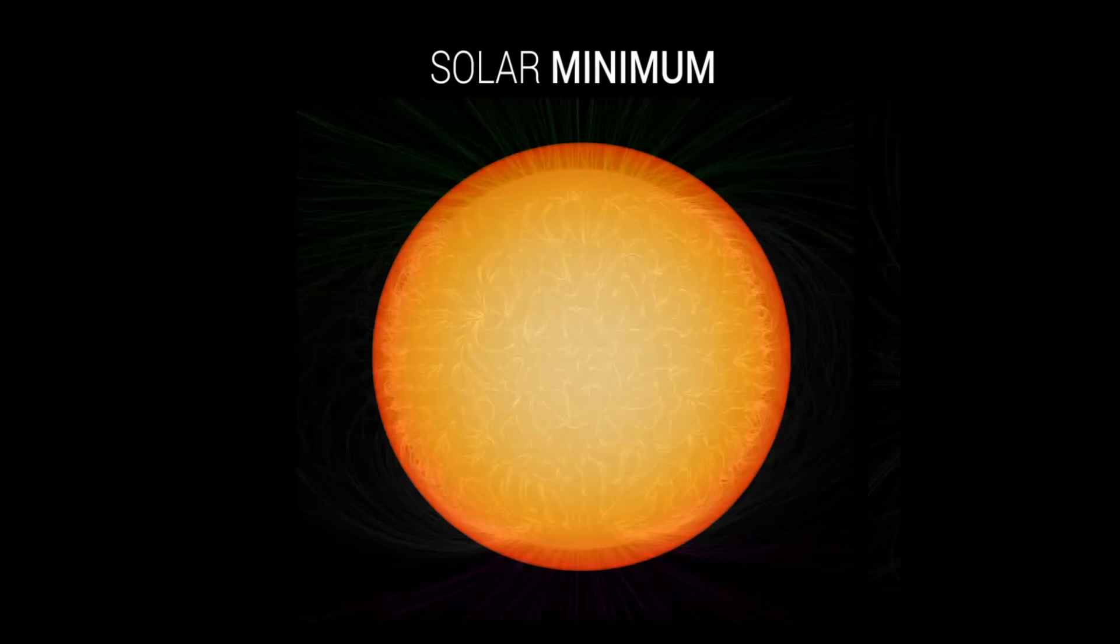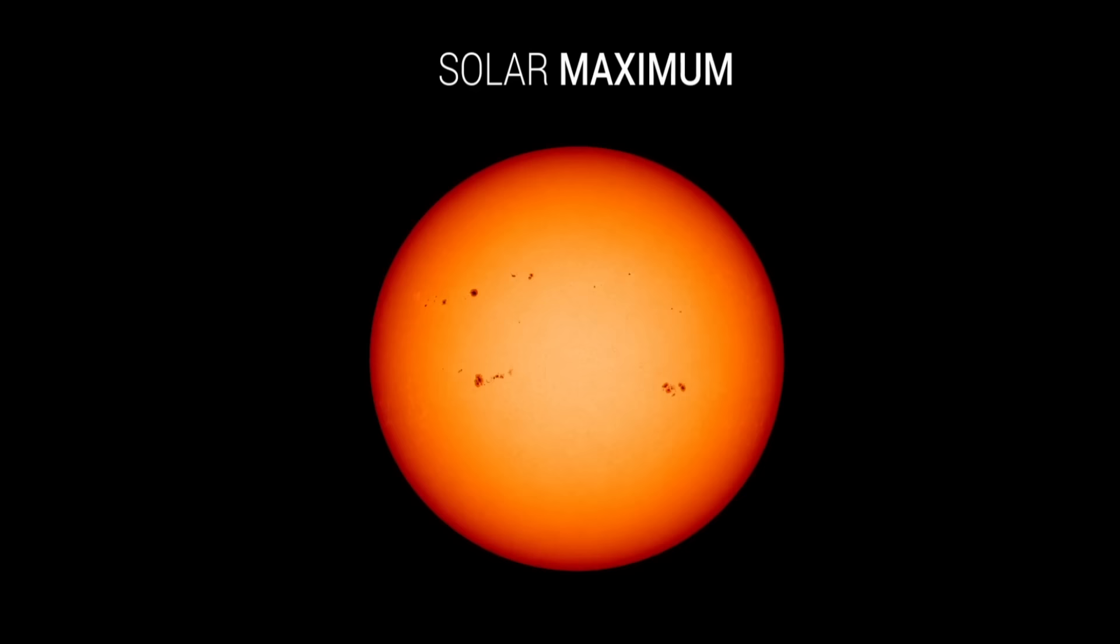Over time, solar activity and the number of sunspots increases. The middle of the solar cycle is the solar maximum, or when the sun has the most sunspots.